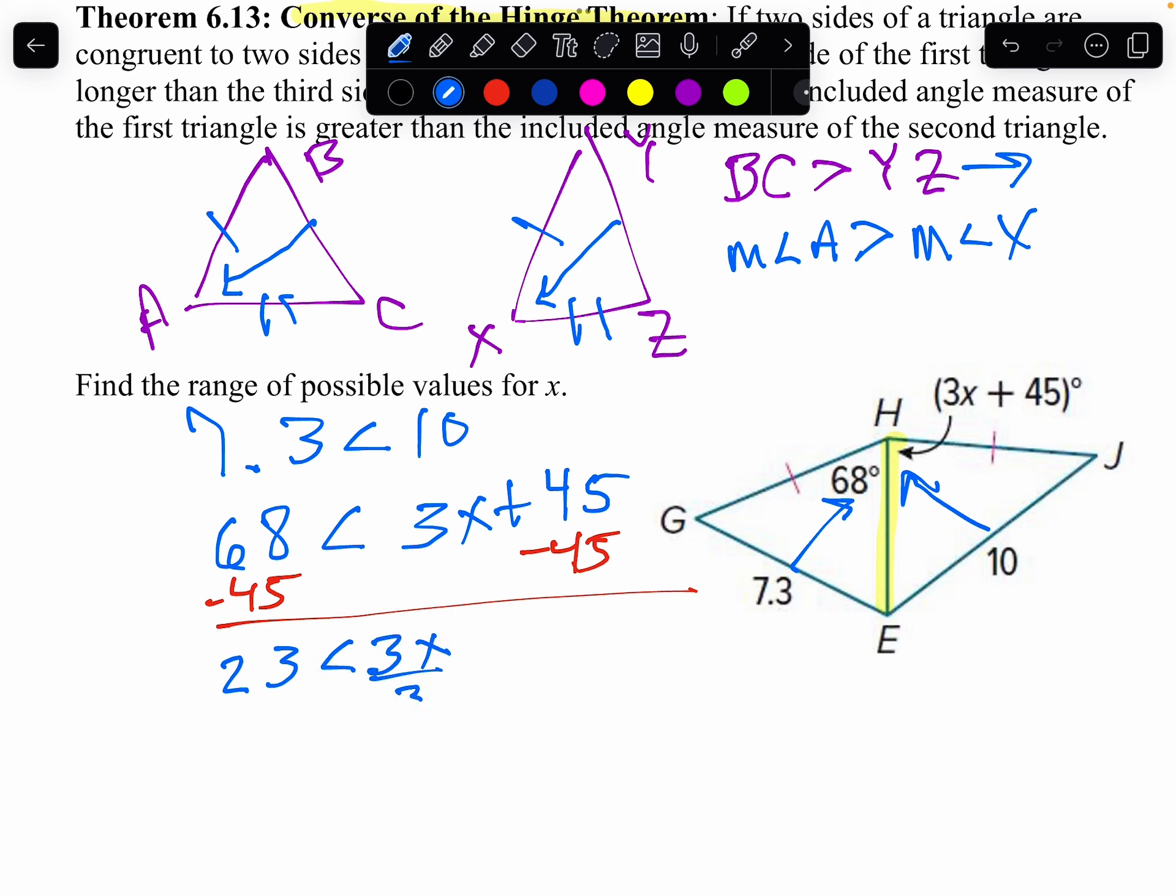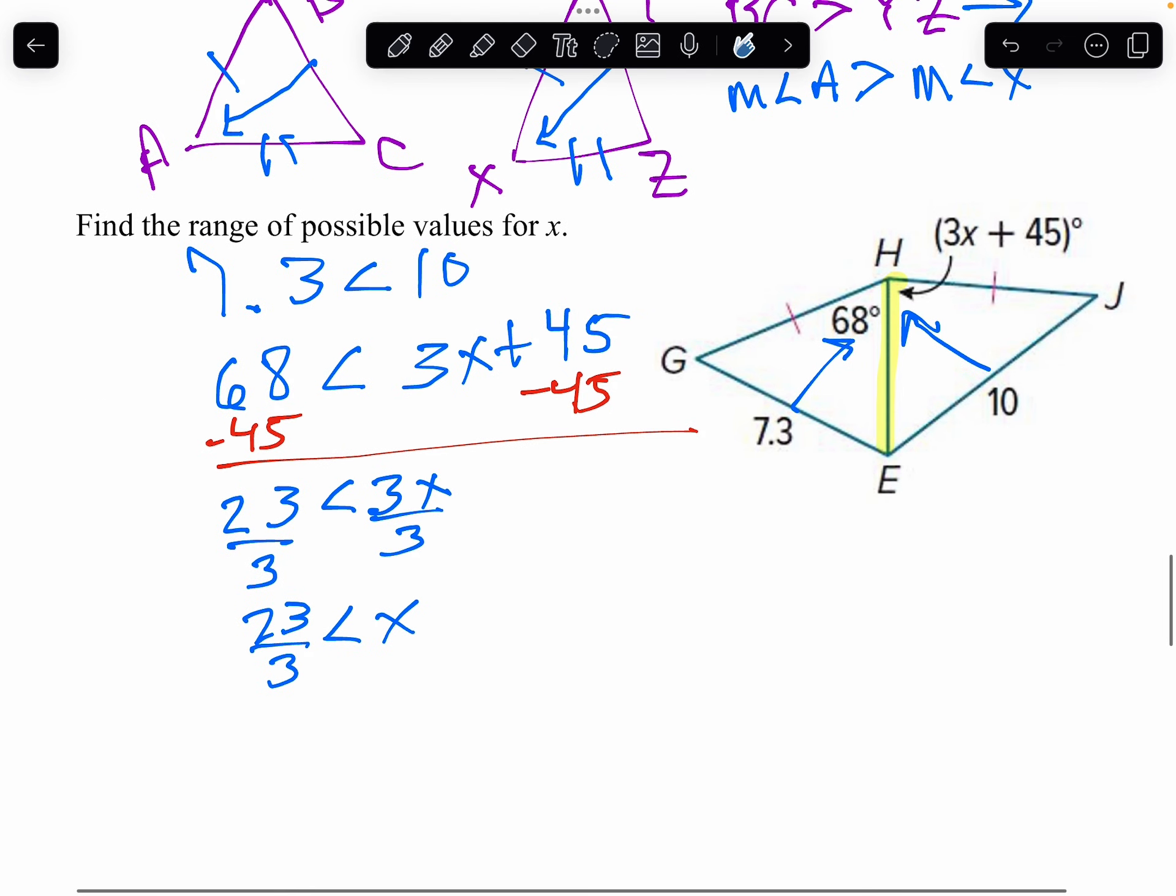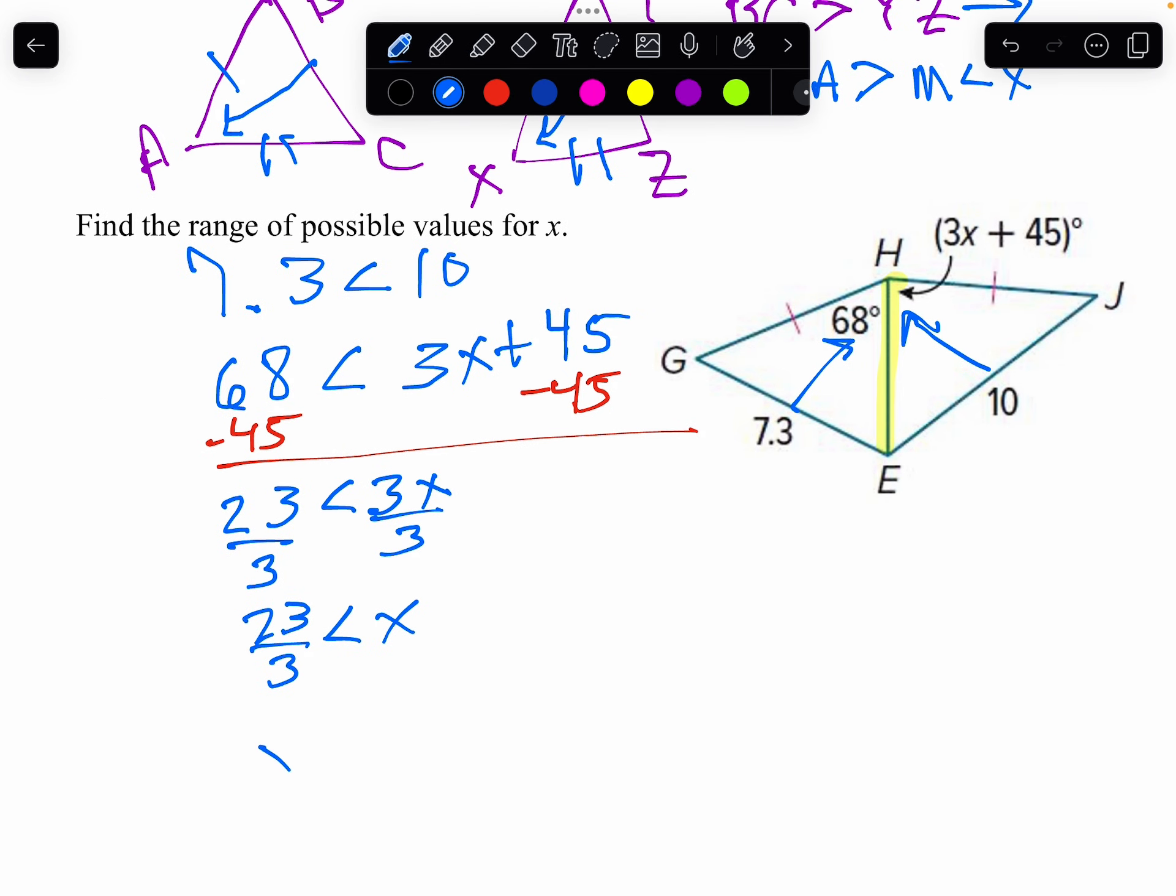I'll divide by 3. I get 23 over 3 is less than X. Now, my personal preference is I always like to have the X on the left-hand side. So I'll flip that around. I'll say X is greater than 23 thirds.